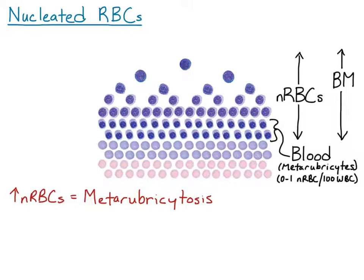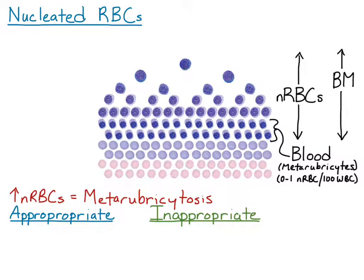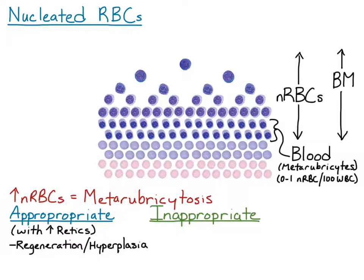There are two types of metarubrocytosis: appropriate metarubrocytosis and inappropriate metarubrocytosis. Appropriate metarubrocytosis is when there is also an increased number or concentration of reticulocytes in blood — a concurrent reticulocytosis — and in this case the metarubrocytosis would be due to regeneration, so erythroid hyperplasia in the bone marrow. This is an appropriate response and the metarubrocytes aren't indicative of another pathologic process.